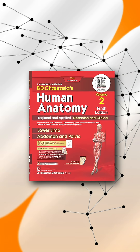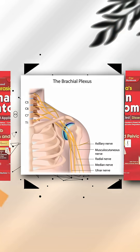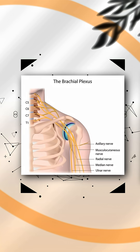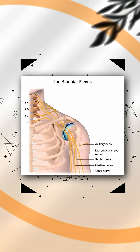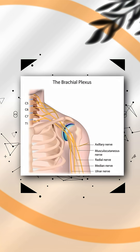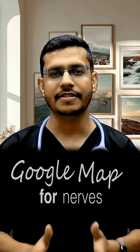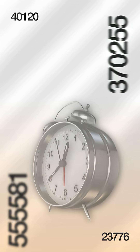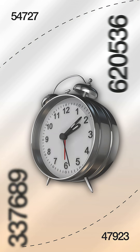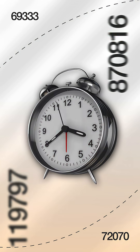Tell me honestly, have you ever opened your anatomy book and seen this monster diagram called the brachial plexus? The one that looks like Google Maps for nerves. Chill, we're gonna decode it in 60 seconds flat.